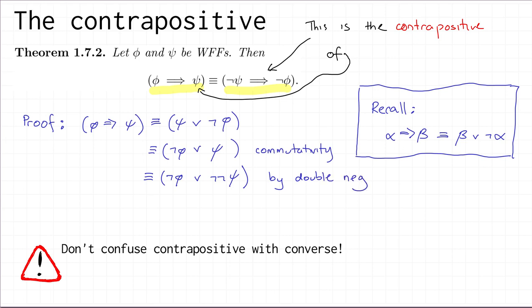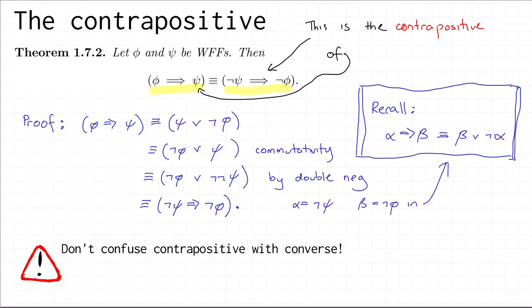Now let's apply the implies equivalence again, taking alpha to be NOT psi and beta to be NOT phi. The result is valid for any well-formed formulas alpha and beta, so in particular for NOT phi and NOT psi. You can see that what you get is that this is logically equivalent to NOT psi implies NOT phi — which is exactly what we claimed. So we are done.